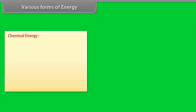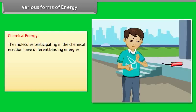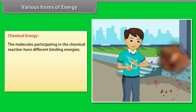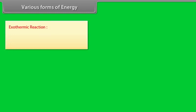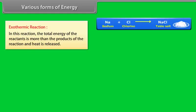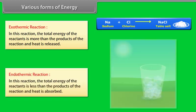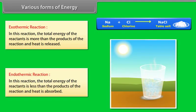Chemical energy. It arises from the fact that the molecules participating in the chemical reaction have different binding energies. A chemical reaction is basically a rearrangement of atoms. There are two types of chemical reactions: number one, exothermic reaction, and number two, endothermic reaction. Exothermic reaction: in this reaction the total energy of the reactants is more than the product of the reaction and heat is released. Endothermic reaction: in this reaction the total energy of the reactants is less than the product of the reaction and heat is absorbed.